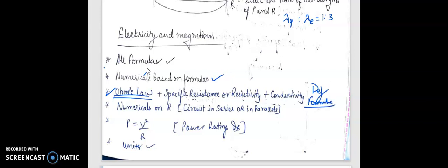You can also refer to the previous year question bank where you will get all numericals based on this. The numericals on resistance, the circuit in series or in parallel. You will get questions of different types here, like a resistance of 5 ohm in parallel and you have to calculate the equivalent resistance.